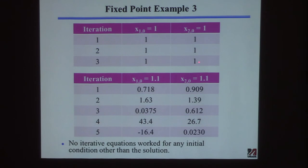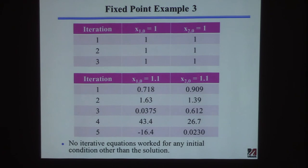Here's one example — if I actually know the answer and guess it, it gives me the answer right back no matter how many iterations. If I guess something pretty close — about 10% error — that doesn't work; it diverges.